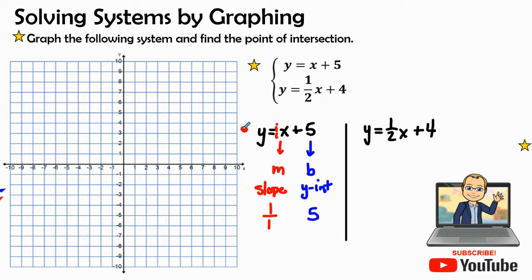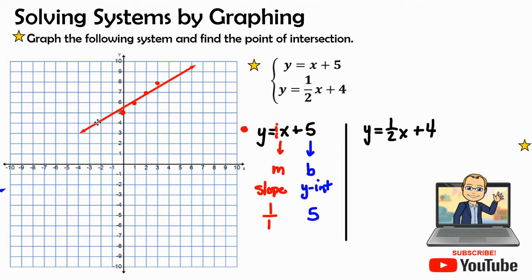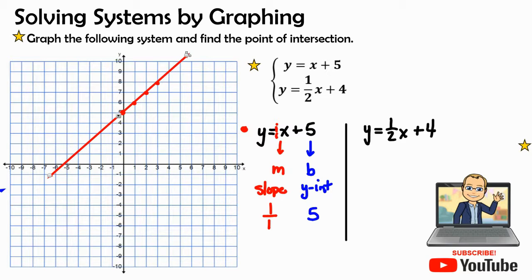I'm going to use red for this first line and blue for my second line. Our starting point is on the y-axis at (0, 5) — right here at five. Then our slope takes us up one, over one; plot the next point, up one over one; plot the next point, up one over one. Let's draw out the line and get it nice and straight.